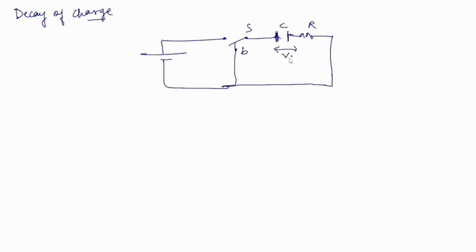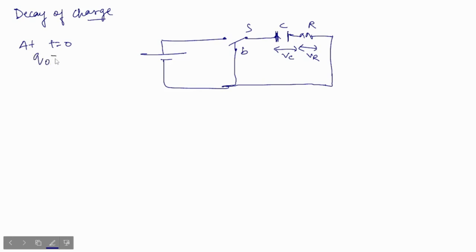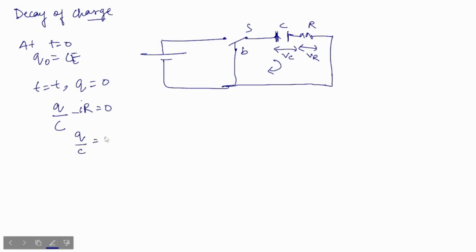Suppose the potential across the capacitor is V and the resistance across it is R. When switch S is connected, the capacitor will start to discharge. At t = 0, the initial charge Q naught equals CE — meaning the capacitor is fully charged. Applying KVL across this loop: Q/C − i×R = 0, which gives Q/C = i×R.